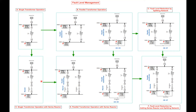Another scenario is adding a reactor in series with the transformer. As soon as we add a reactor with the transformer, the impedance will be high and the current will reduce. For example, comparing with the 12 kiloamp case, it is now reduced to 6 kiloamps because of the impedance of the reactor. Then, looking at the parallel transformer with added series reactors, the fault current reduces from 23 kiloamps down to 11 kiloamps — almost half.